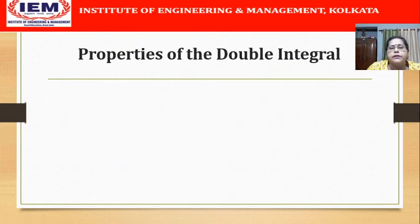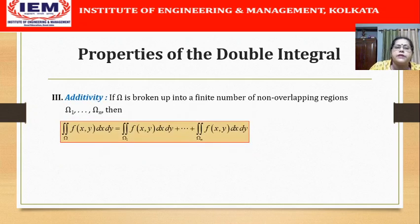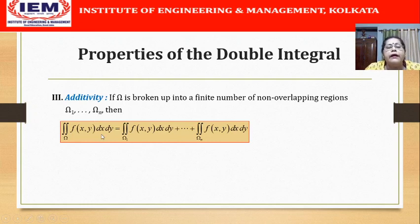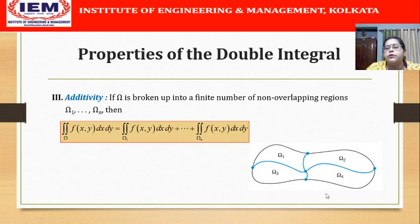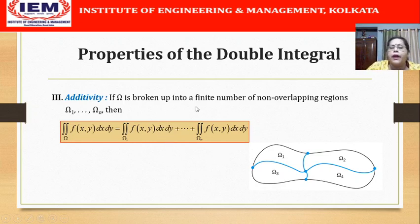The third property is the additivity property, which states that if omega is broken up into a finite number of non-overlapping regions omega 1, omega 2, ..., omega n, then the double integral of f(x,y) dx dy over omega equals the sum of the double integrals over each of those regions from omega 1 to omega n. In particular, if the region omega has been broken into four parts omega 1, omega 2, omega 3, omega 4, then the right-hand side will have the sum of four integrals calculated over omega 1, omega 2, omega 3, and omega 4.